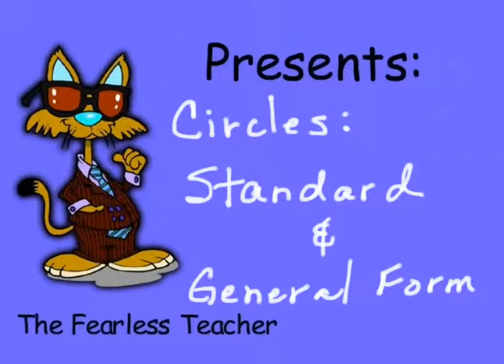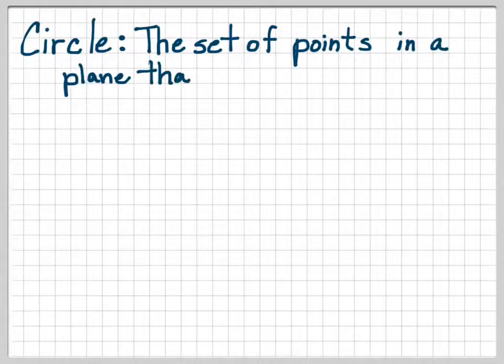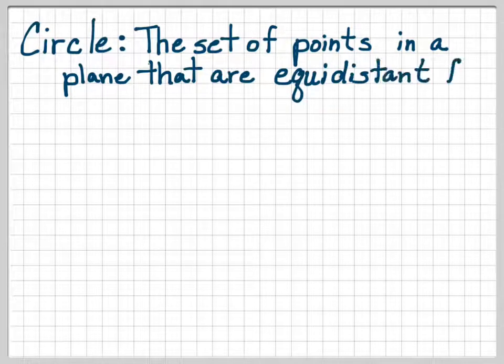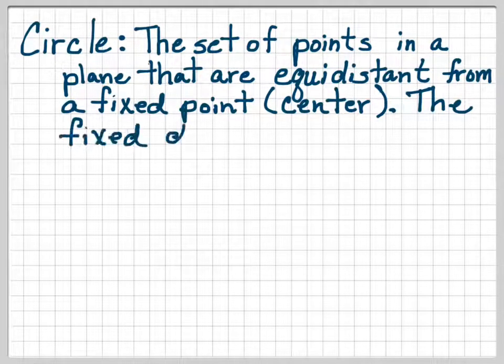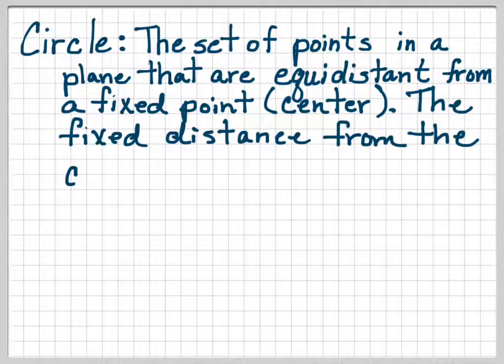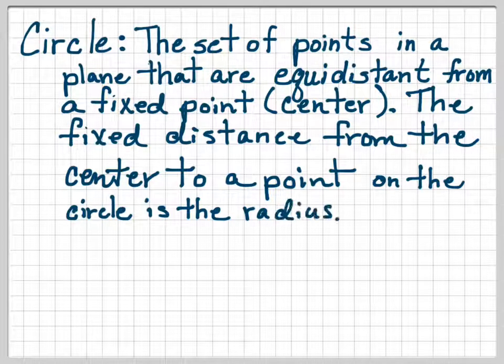Now we're going to talk about circles in standard and general form. Start with the definition of a circle. A circle is the set of points in a plane that are equidistant from a fixed point called the center. The fixed distance from the center to the point on the circle is the radius.